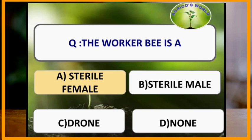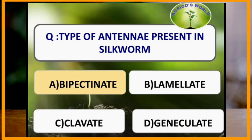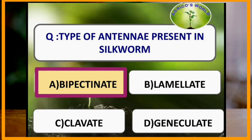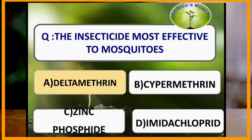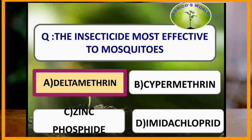The worker bee is a sterile female. The type of antennae present in silkworm is bipectinate — segments bear lateral processes on either side giving a double comb-like appearance. The insecticide most effective against mosquitoes is deltamethrin.